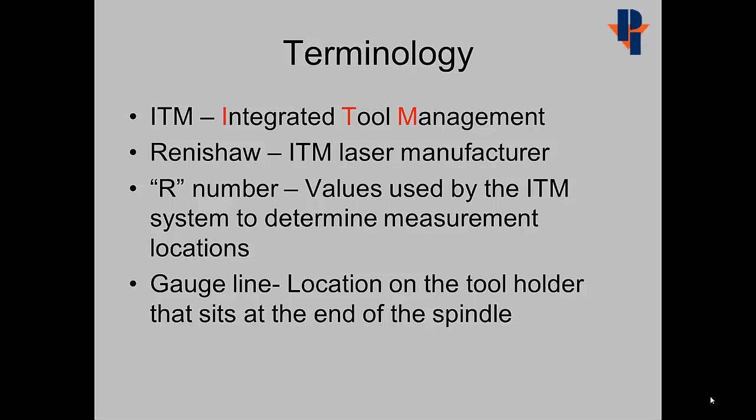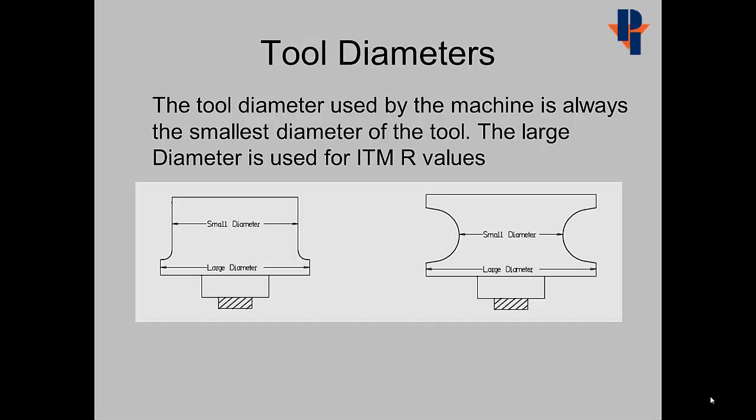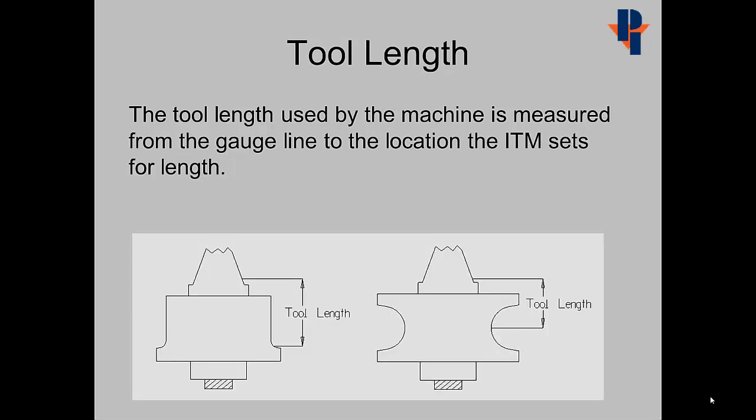Integrated Tool Management: Renishaw is the ITM laser manufacturer. R numbers are values used by the ITM system to determine measurement locations. The gauge line is the location on the tool holder that sits at the end of the spindle. The tool diameter used by the machine is always the smallest diameter of the tool. The large diameter is used for ITM R values. The tool length used by the machine is measured from the gauge line to the location the ITM sets for tool length.